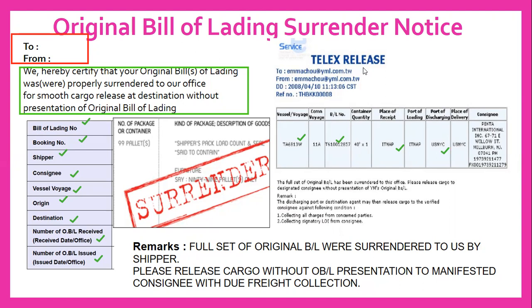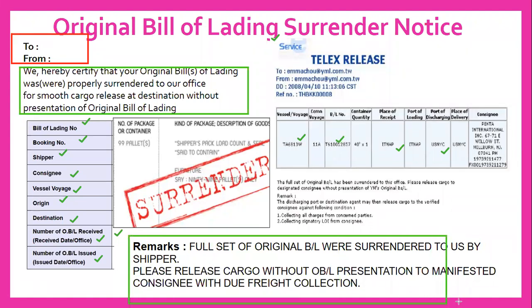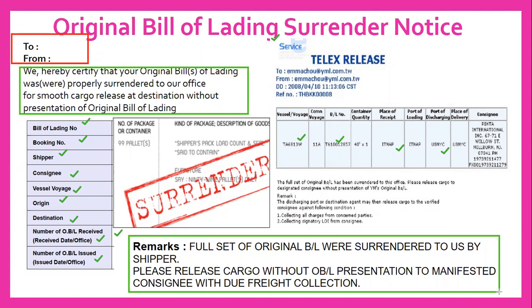Here is another telex release form where the port name and details are mentioned. This notice needs to be sent to the destination agent, and the destination agent will collect the shipment. Once we send this notice to the destination agent or destination shipping line office, they will release the cargo. In the remarks it is mentioned: 'Full set of original bill of lading were surrendered to us by shipper. Please release cargo without original bill of lading presentation to the manifested consignee without any demurrage collection.'